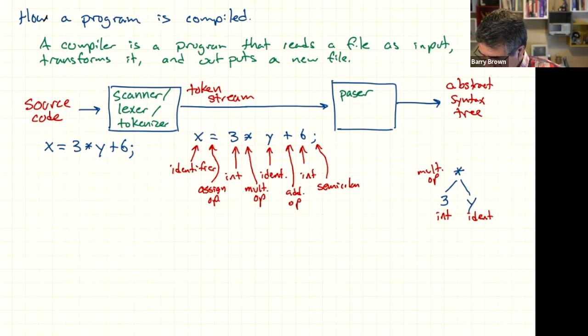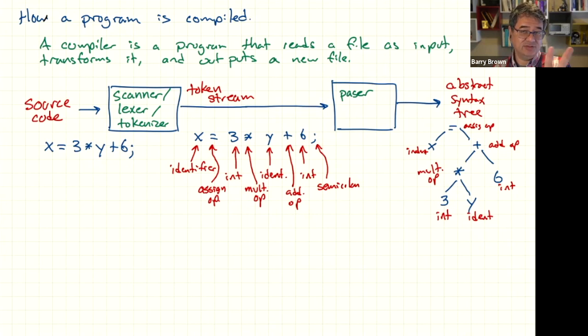This is the multiplication operator. Then we've got the 6, which is combined together with the plus operator. This is an integer, and then the add operator. And then finally, these are joined together with the x. This is an identifier, and this is the assignment.